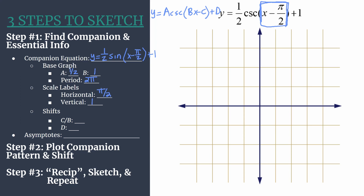Let's label our axes now. Starting with the horizontal axis, we count by pi over two: pi over two, two pi over two reduces to pi, three pi over two, four pi over two reduces to two pi. Then going in the negative direction using negative values. On the vertical axis we count by one, so we go ahead and have the grid fully labeled.